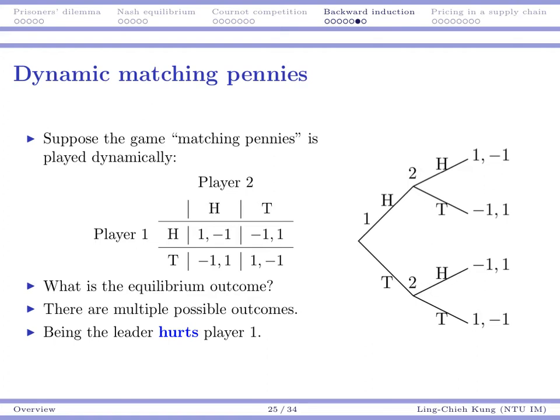Consider the game H and T. And here, let's solve this game. Previously, there is no Nash equilibrium. But now, when player two is making her decision, one is better than negative one. So player two will choose T. And then if player two observe T, he will choose H, because one is greater than negative one.